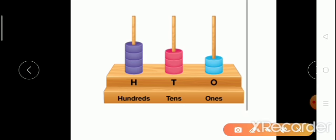First, we count the beads at the ones place. Chivansky, tell me how many beads are at the ones place? Count. One, two — two. Very good. Now Pranjali, tell me how many beads are at the tens place? Count it. One, two, three — three. Very good. And Arpit, tell me how many beads are at the hundreds place? One, two, three, four — four. Nice. So what number do we get? We get 432.